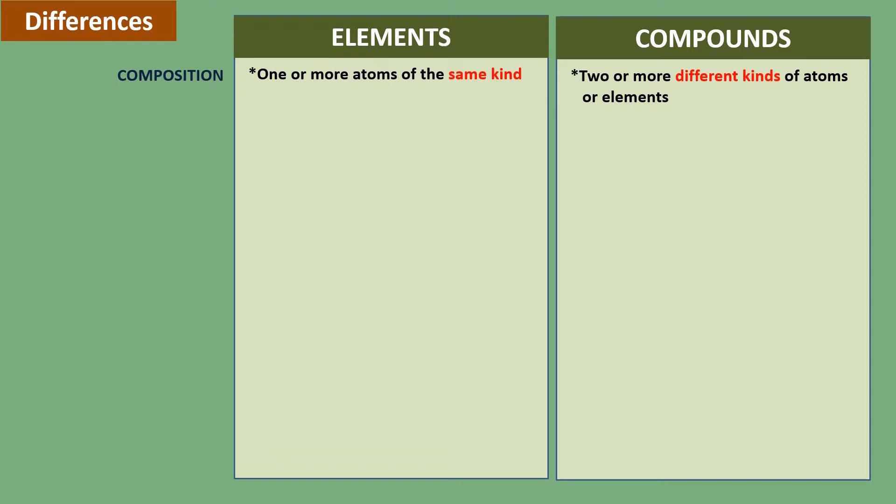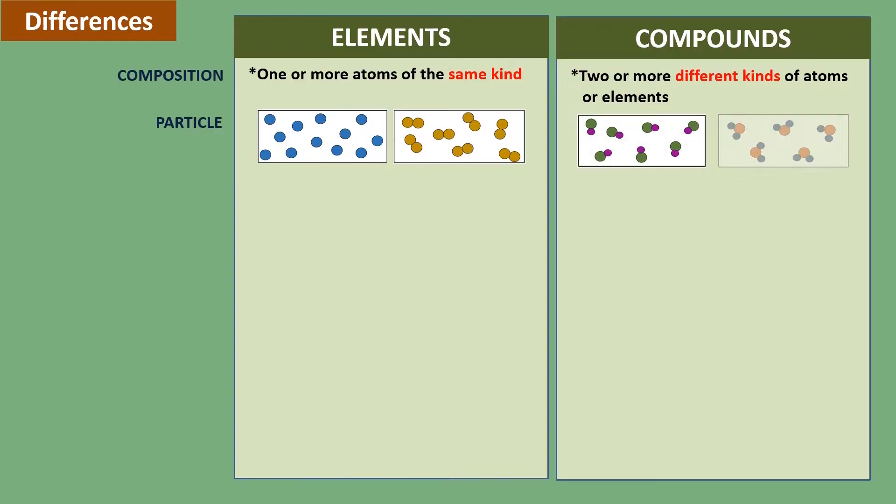Now let us move on to their particle. The particles of elements look like this - atoms can be isolated or combined with the same atoms, while the particles of compounds combine with two or more different types of elements.